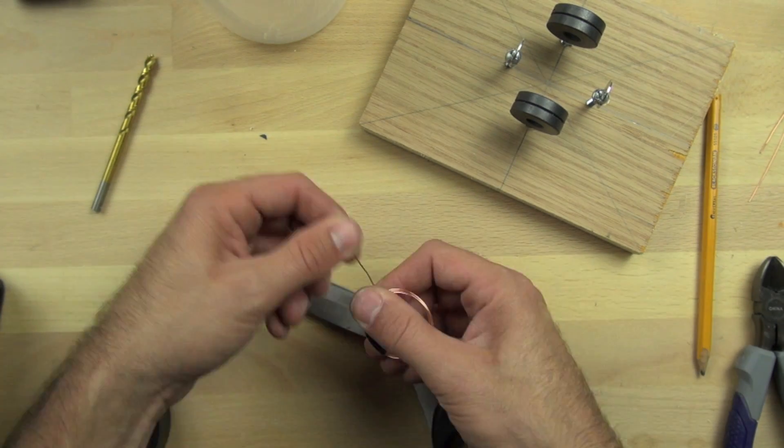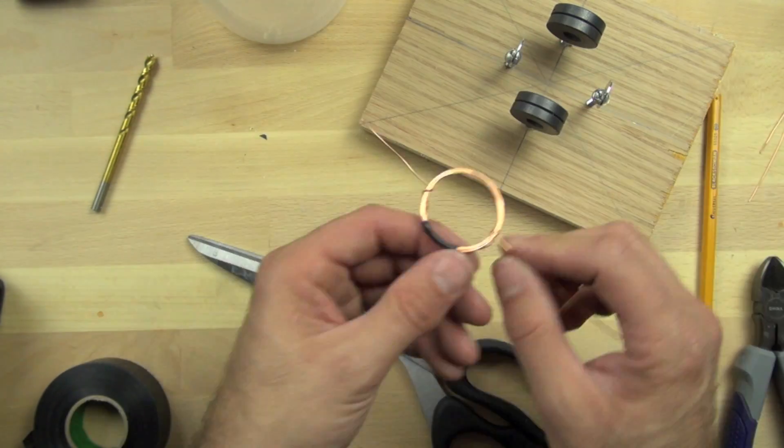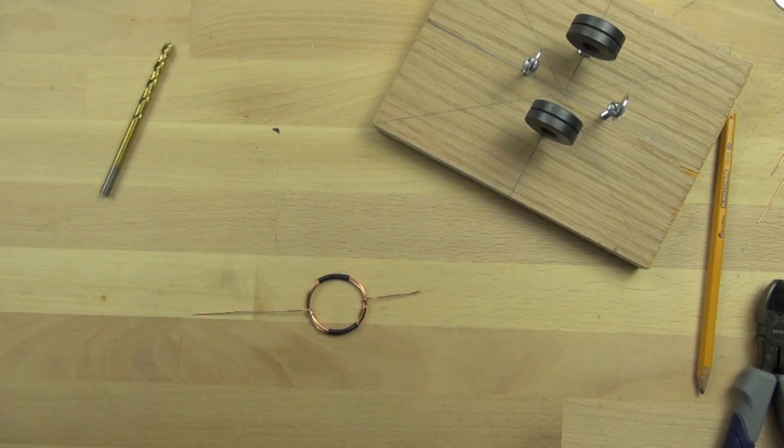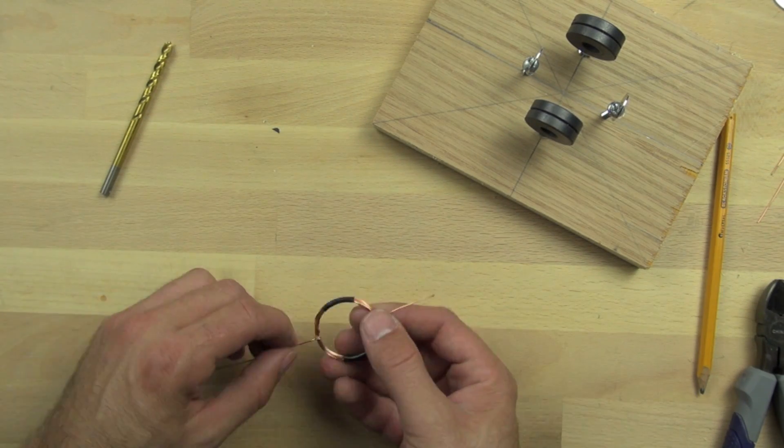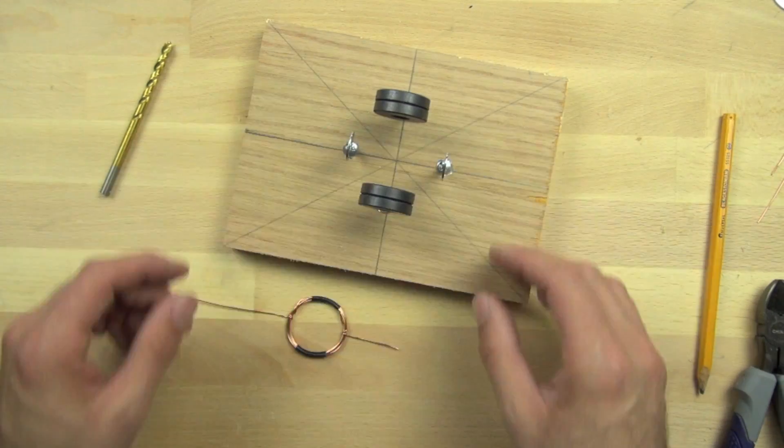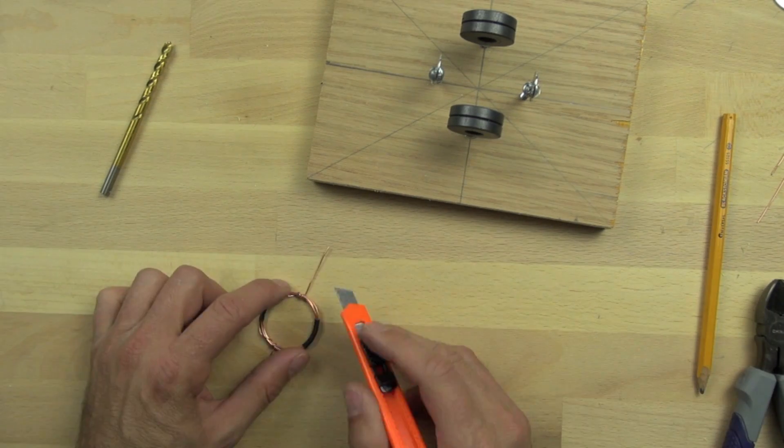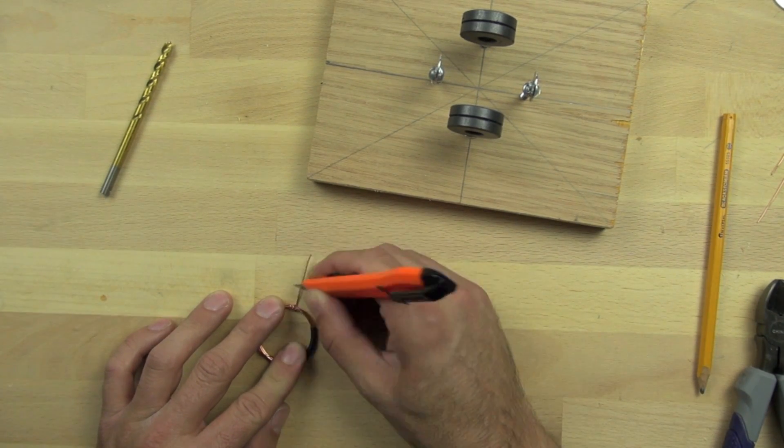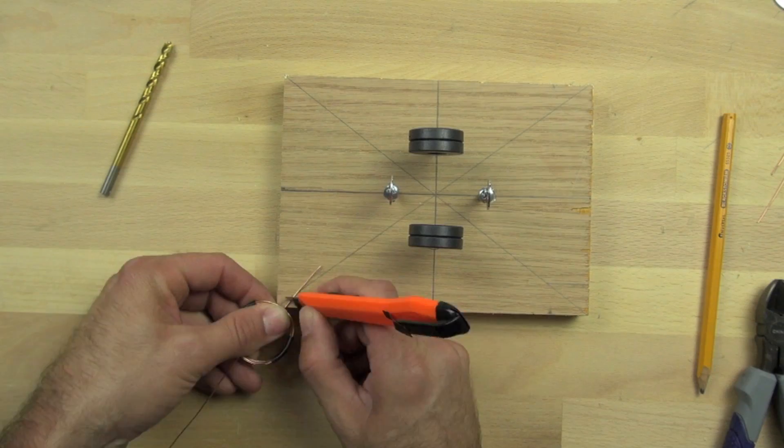Again, this wire is insulated even though it doesn't look like it is. It has a thin lacquer coating on it. And so what we need to do now in order to allow power to flow through the wire and to get it to behave like an electromagnet is we need to scrape off the lacquer coating on one side.